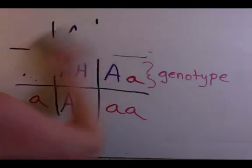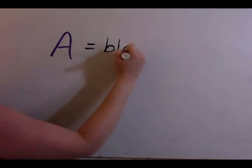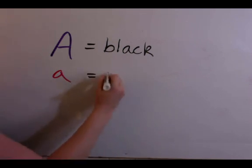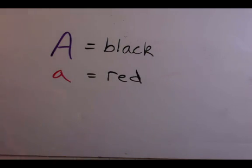The classic study that looks at a monohybrid cross is Mendel's peas, but I'm a horse person, so let's just assume that big A means a black-coated horse, and little a means a red-coated horse.